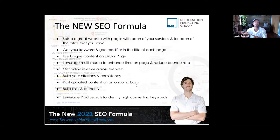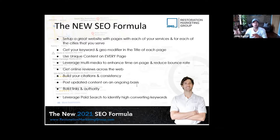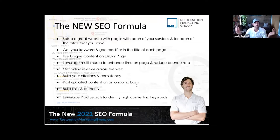You want a website built to convert, with separate pages for your services and the separate cities you serve — that's the bare bones stuff. You want to have your keywords dialed in with the geomodifier, which means the city pages. For that particular city, you want that page dialed in. You don't want any cross-mingling — you don't want Fort Worth and Dallas on the same page, because then Google doesn't know where you service. You want separate pages for those particular cities.